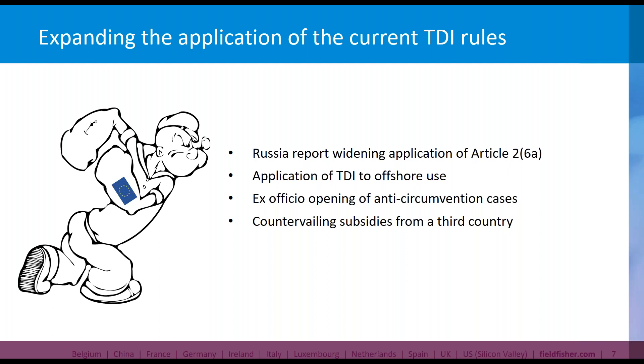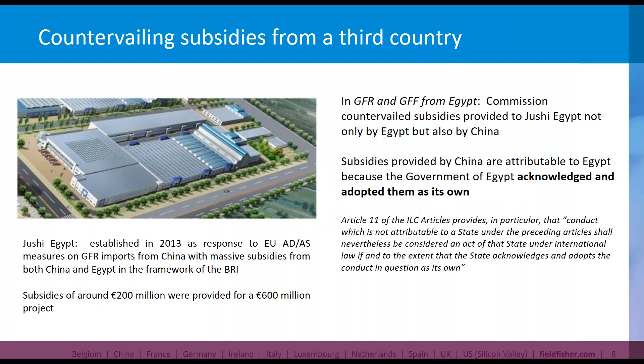Probably the most important new development is that the Commission has, for the first time — and this is a global, worldwide first — counterweighted subsidies from a third country. In June 2020, in two parallel anti-subsidy investigations, the Commission imposed subsidy duties on imports of glass fibre reinforcement and glass fibre fabrics from Egypt. These subsidy duties did not only address and countervail the subsidies provided by Egypt, but also those subsidies that could ultimately be traced back to China.